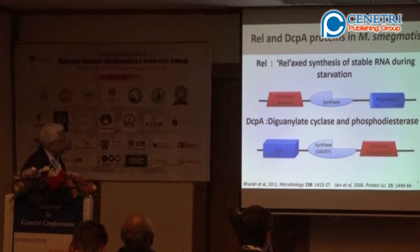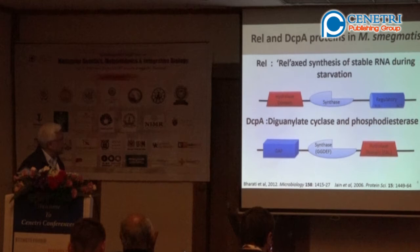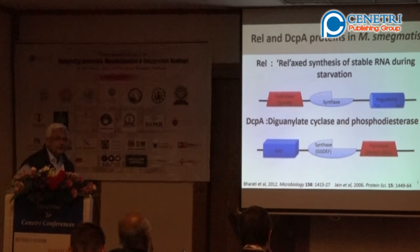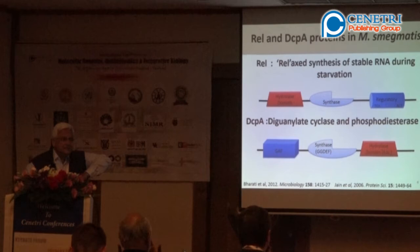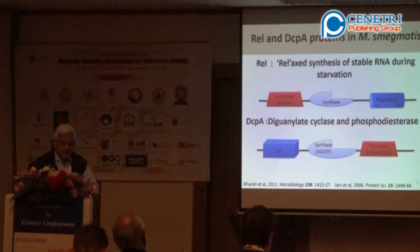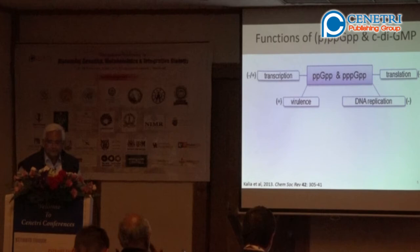I will talk mostly about two proteins from Mycobacteria. They have relaxed synthesis of stable RNA during starvation — REL and DcpA — and we have published several reviews on this over the last 10–15 years. There is a hydrolysis domain, a synthesis domain, and a regulatory domain in both proteins. The REL and DCPA genes synthesize small molecules and then degrade them depending on concentration: if concentration is too high, degradation starts; if too low, synthesis starts. There is a beautiful balance between the two activities which controls the mechanism.